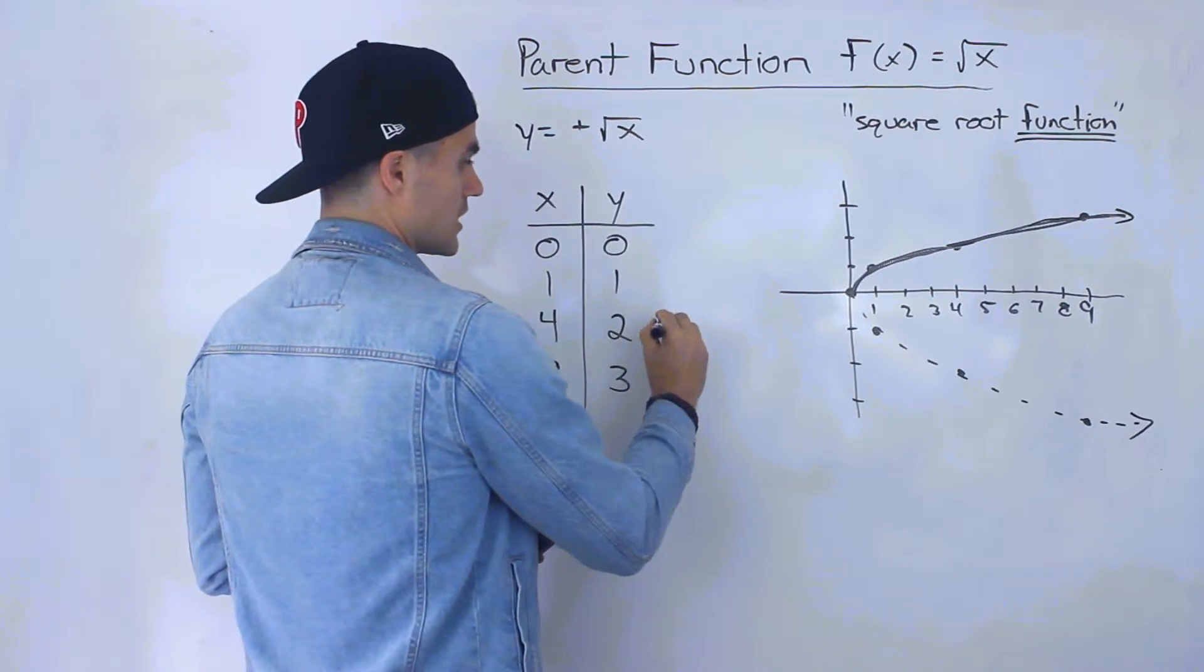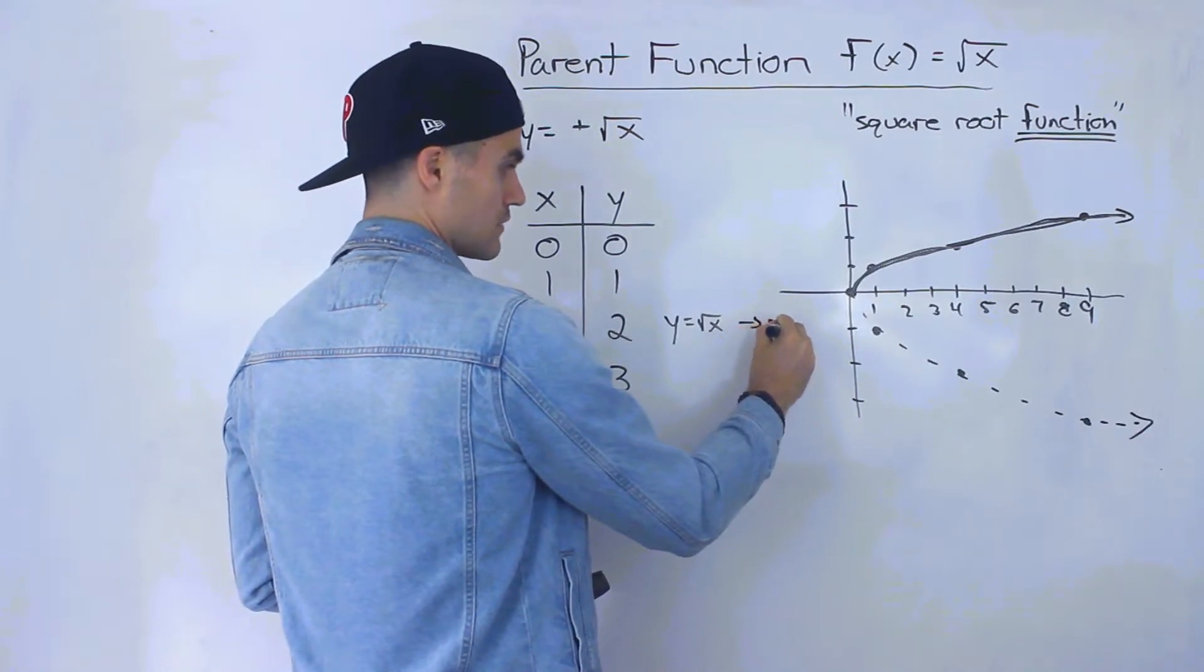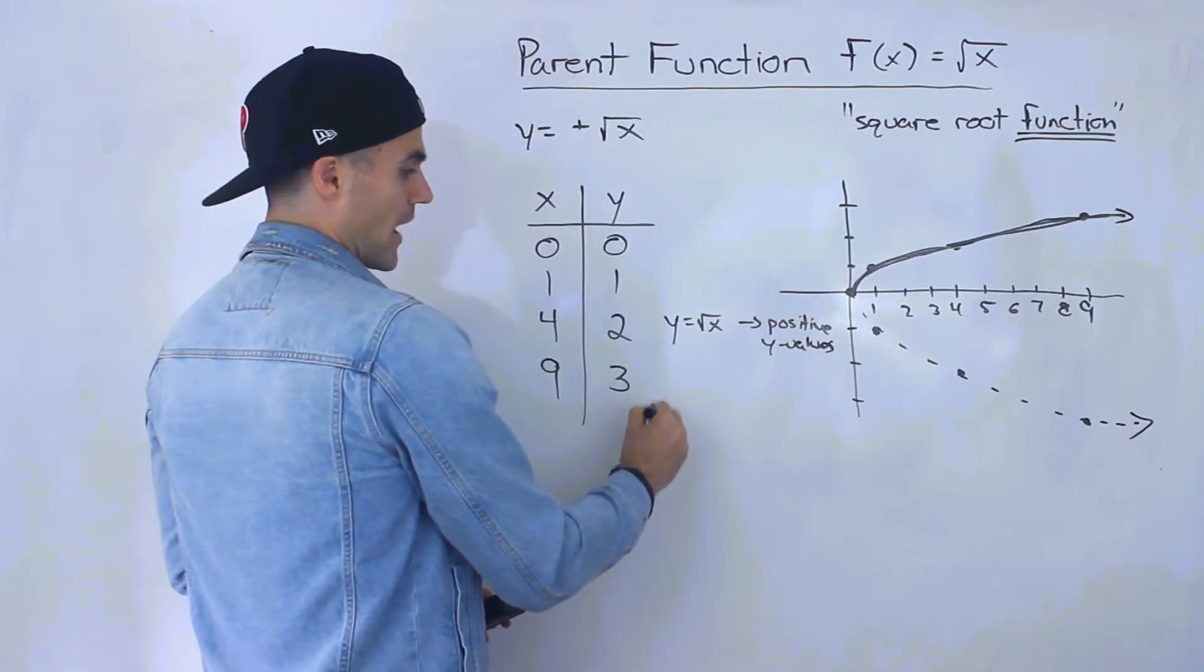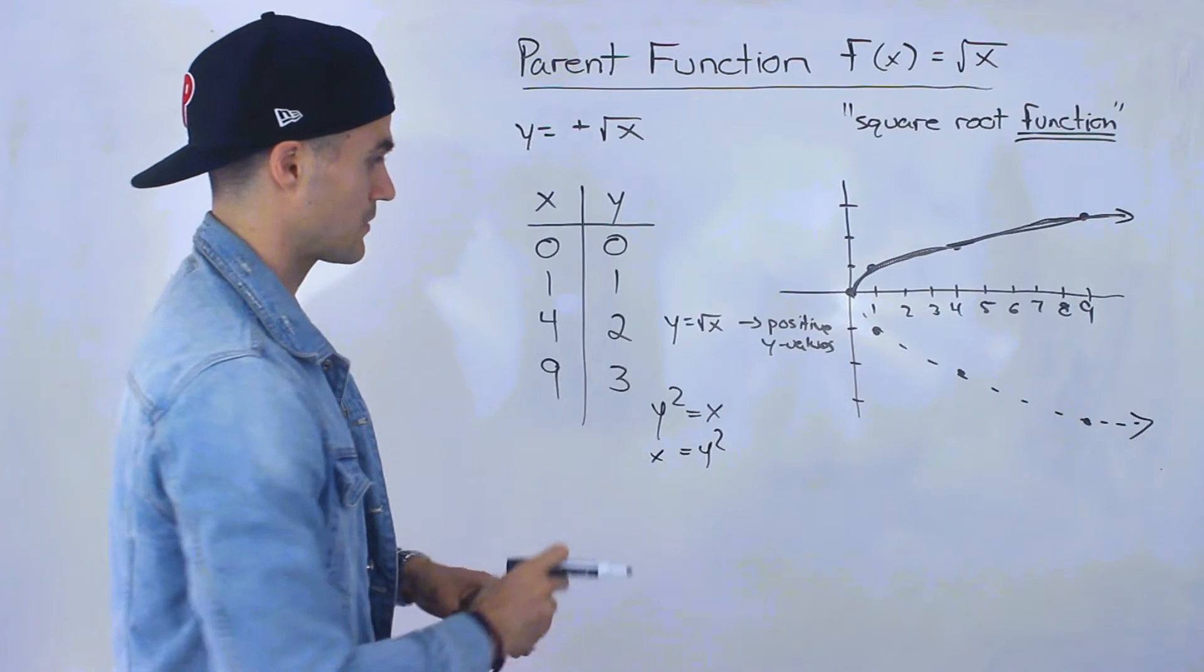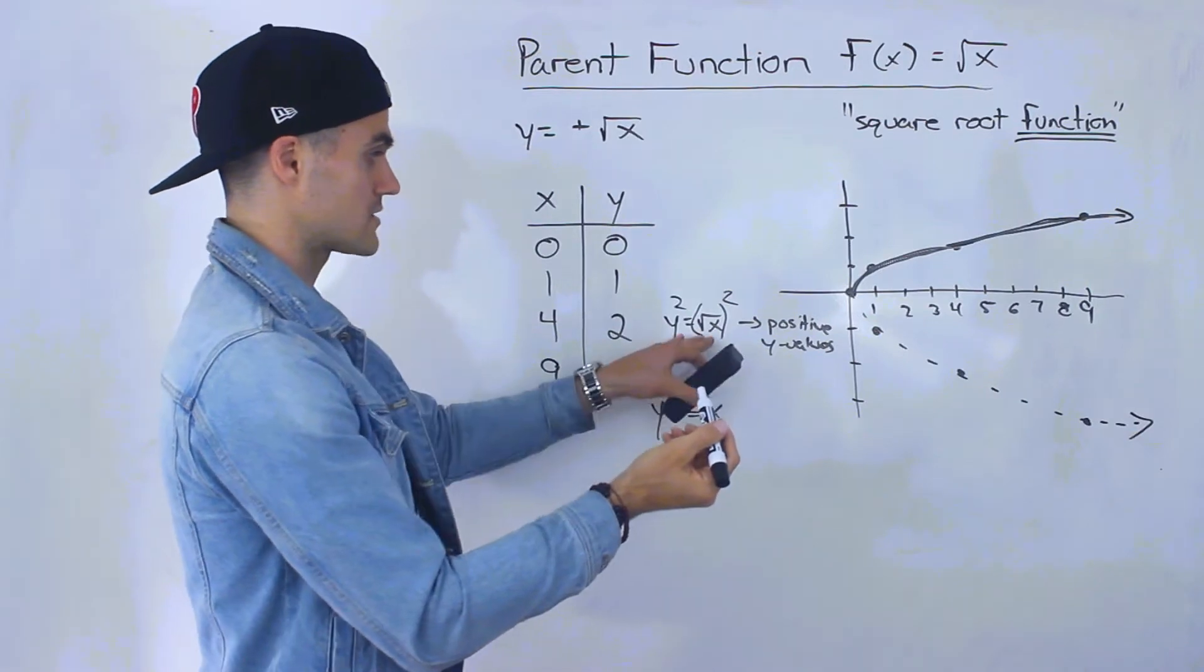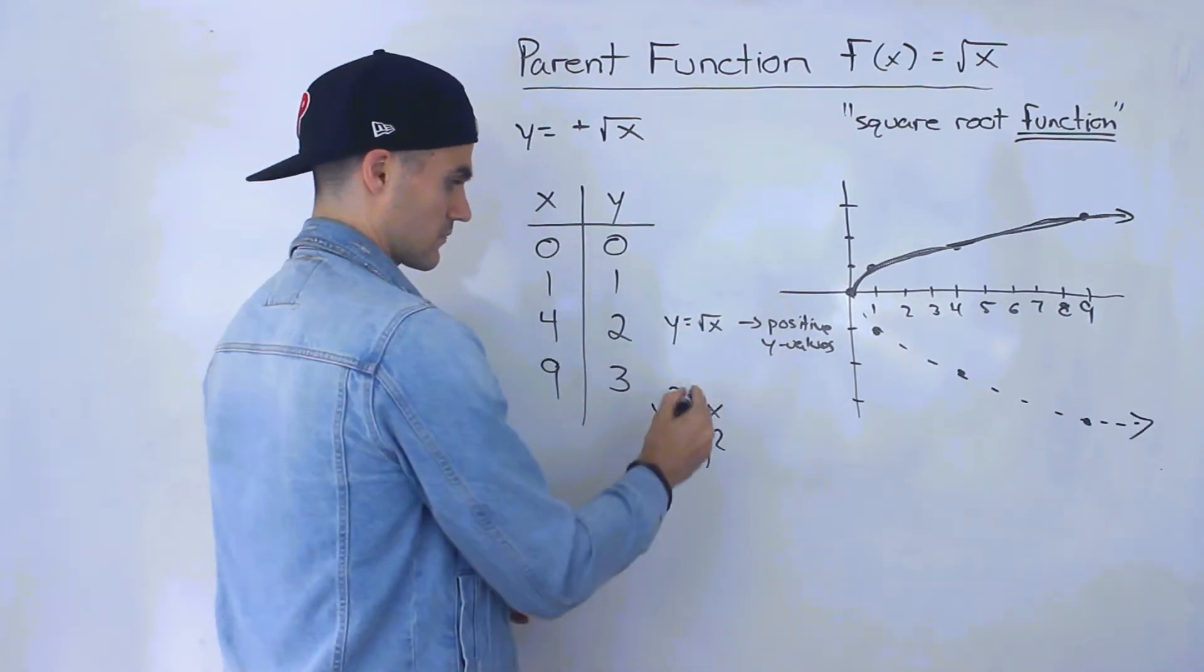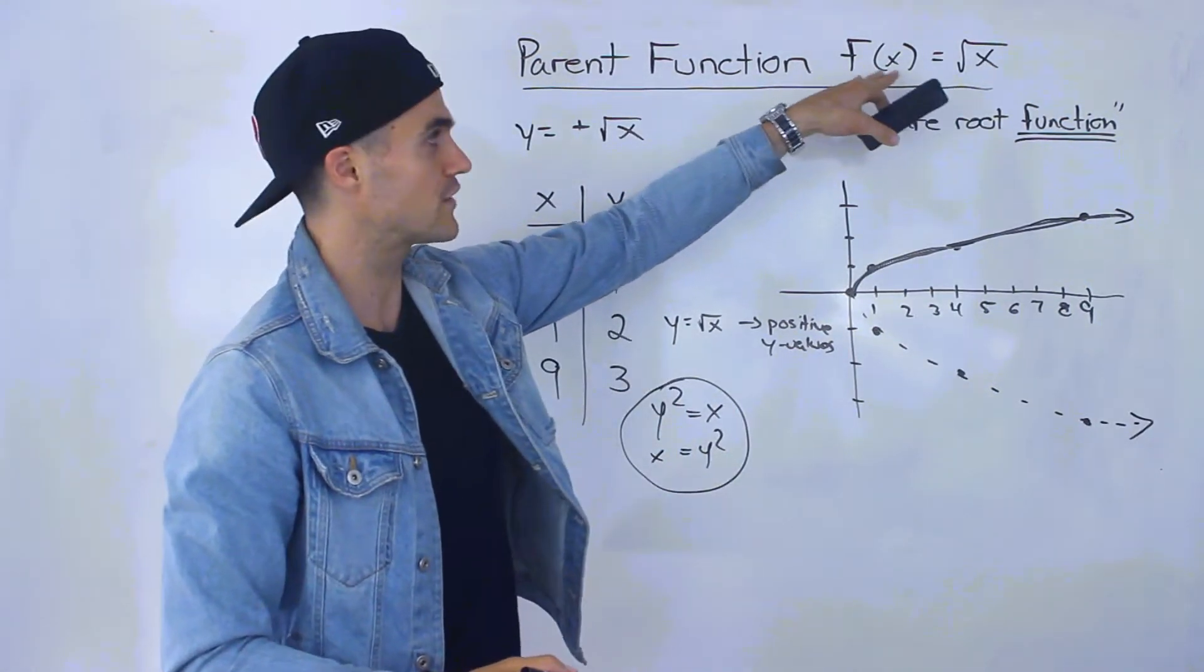Now one thing I want to mention is if you see y equals the square root of x, then you only deal with the positive y values. But if you see something like y squared is equal to x, or x equals y squared, notice that this and this are the same thing. Basically to get from here to here, we just squared both sides, and the square root of x squared is x, and then y squared is y squared here. So this here, if you see something in this format, it's not in that proper function format, function notation here, because the y is not isolated. We got y squared equals x.